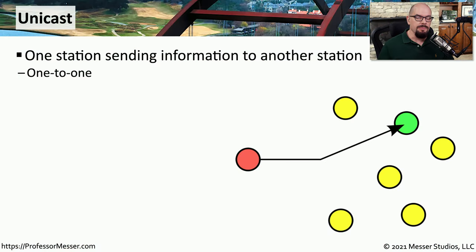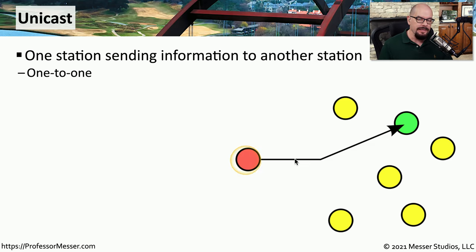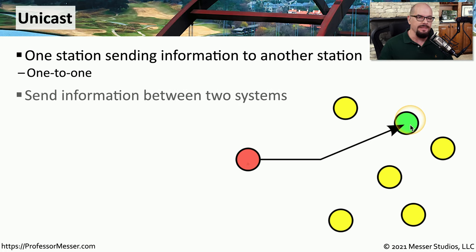If you're using a desktop computer, a mobile device, or any other device connected to the network, most of your communication is probably going to be unicast. Unicast means that one device is sending information directly to another device. This is a one-to-one communication between these two devices.